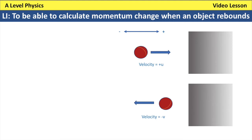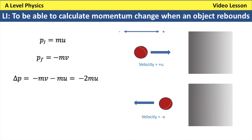The initial momentum of the cricket ball is its mass multiplied by its velocity, so mu. The final momentum is minus mv, because it's moving in the opposite direction. The change in momentum is always final momentum minus initial momentum, so it becomes minus mv minus mu. Simplifying by assuming no loss of speed during the collision, this gives minus 2mu.